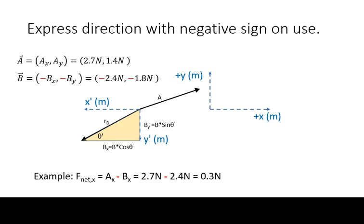In this example, we are calculating a net force by two forces. The magnitudes in the x-direction are 2.7 newtons and 2.4 newtons. Because the second force has an x-component in the negative direction, we subtract it in the equation.